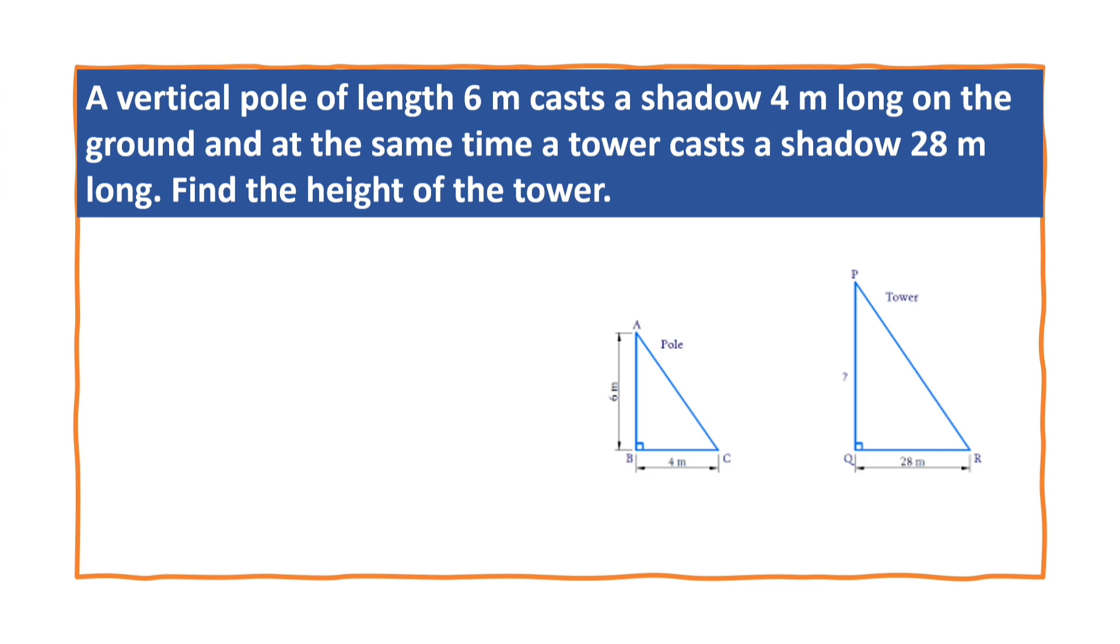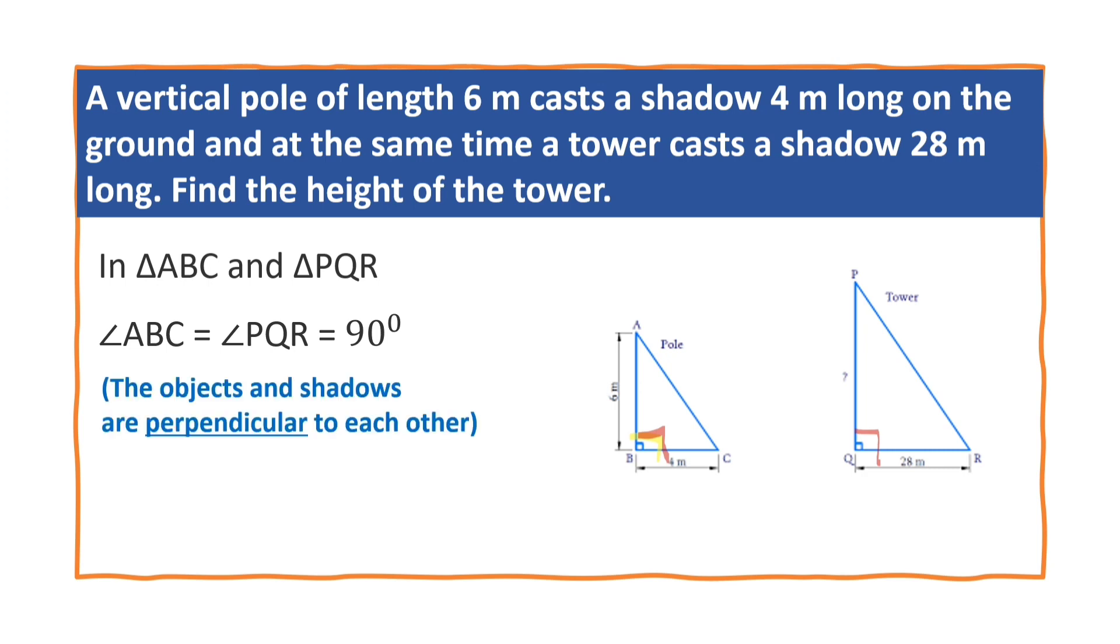Now in triangle ABC and PQR, we have angle ABC is equal to angle PQR, that is 90 degrees. Why? The object and shadows are perpendicular to each other.